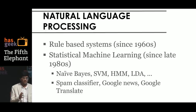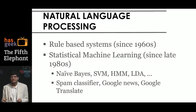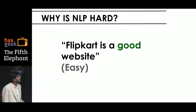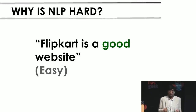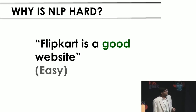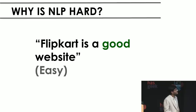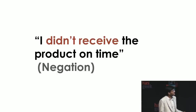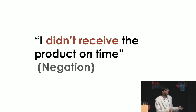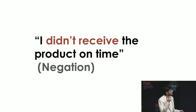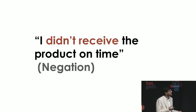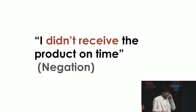Let me take a few examples for people new to NLP to appreciate why it is hard. Sentiment analysis is a problem I've been working on for a long while. 'Flipkart is a good website' — easy, just count positive words. 'I didn't receive the product on time' — slightly harder, because 'receive' is not a positive word anywhere. But a good statistical classifier will still catch this because it will see the bigram 'didn't receive' occurred many times in negative tweets, and classify this as a negative statement.